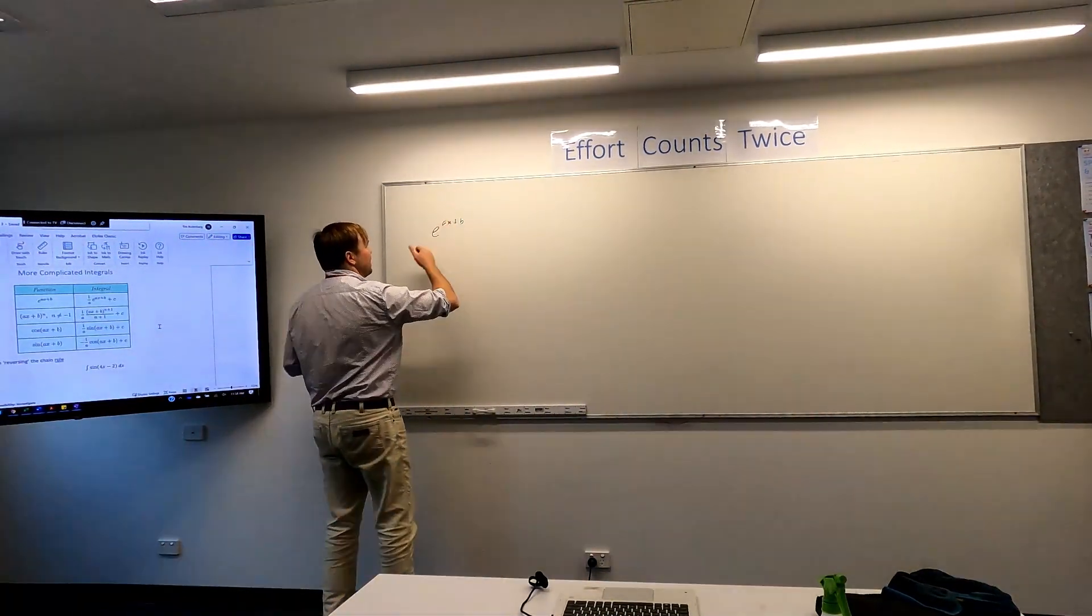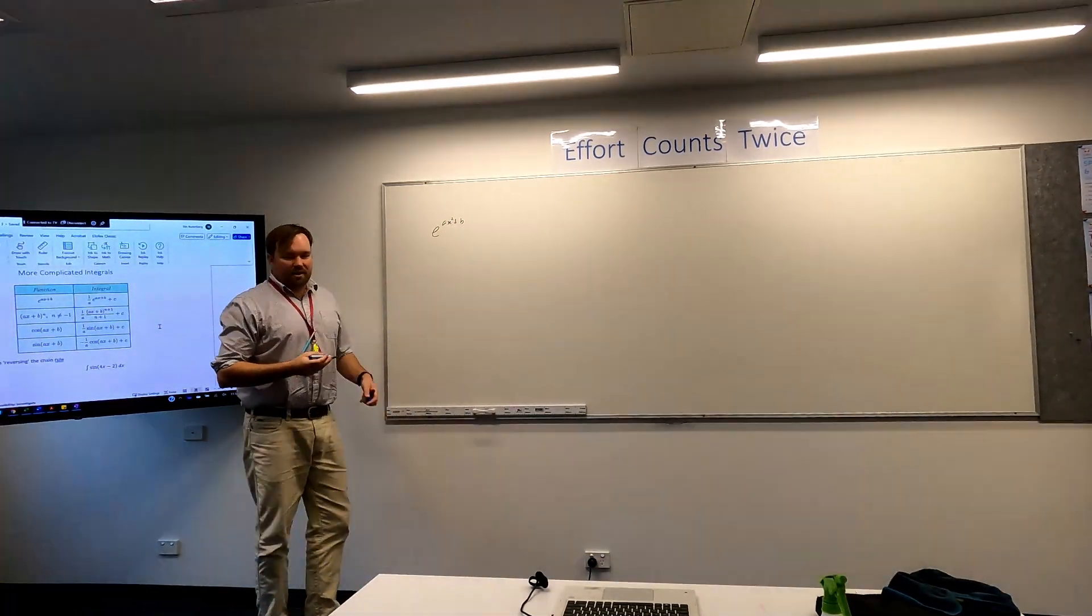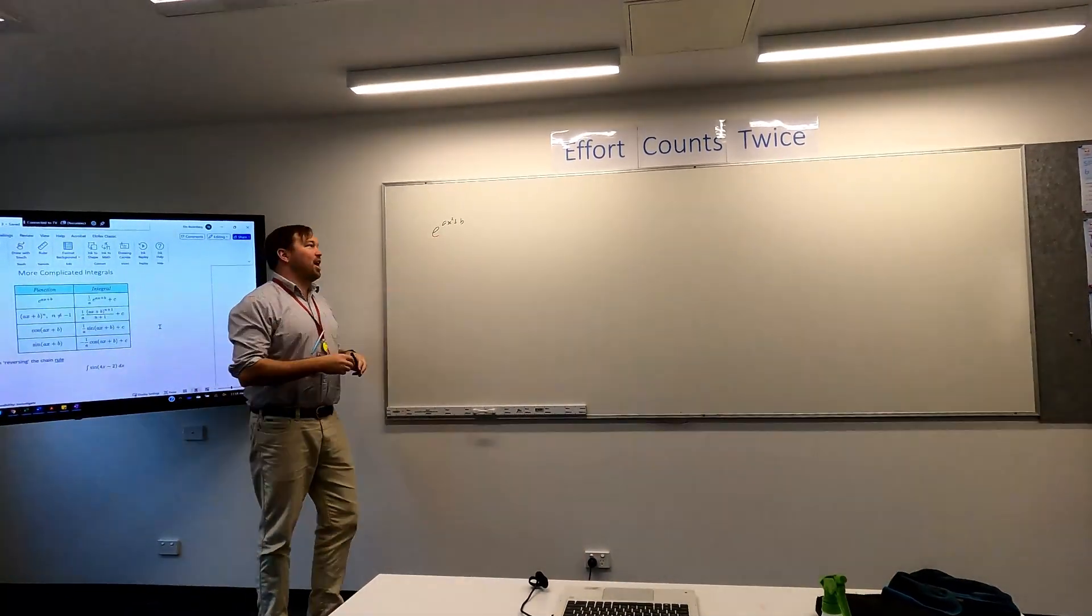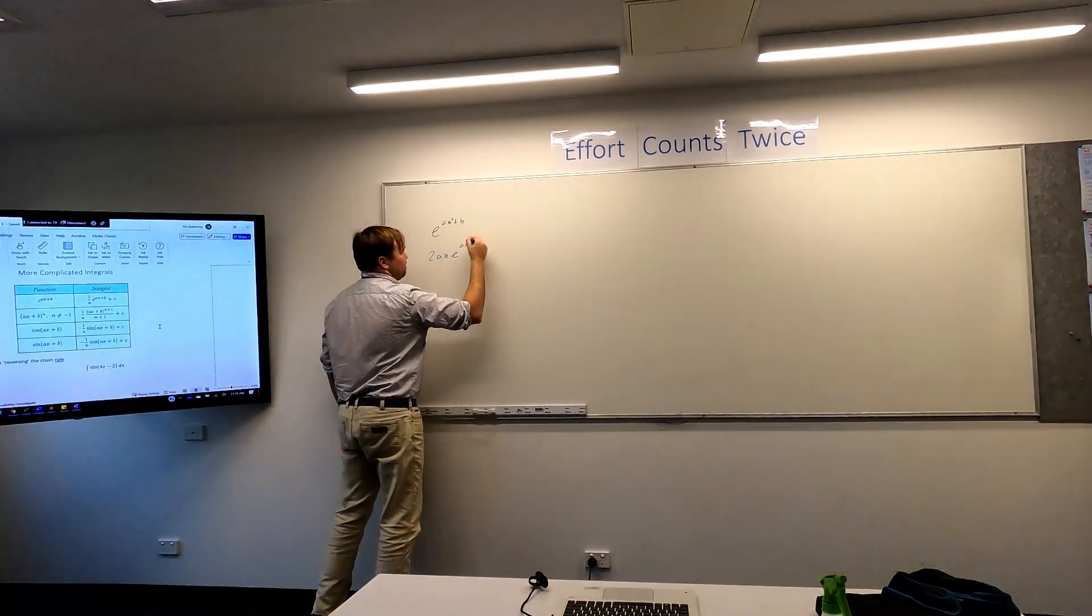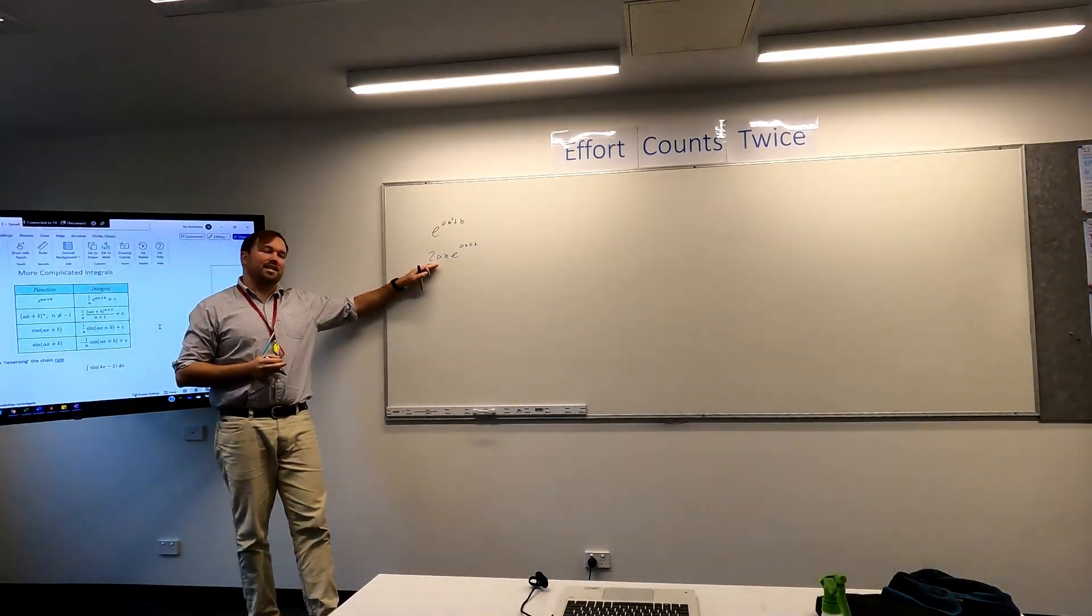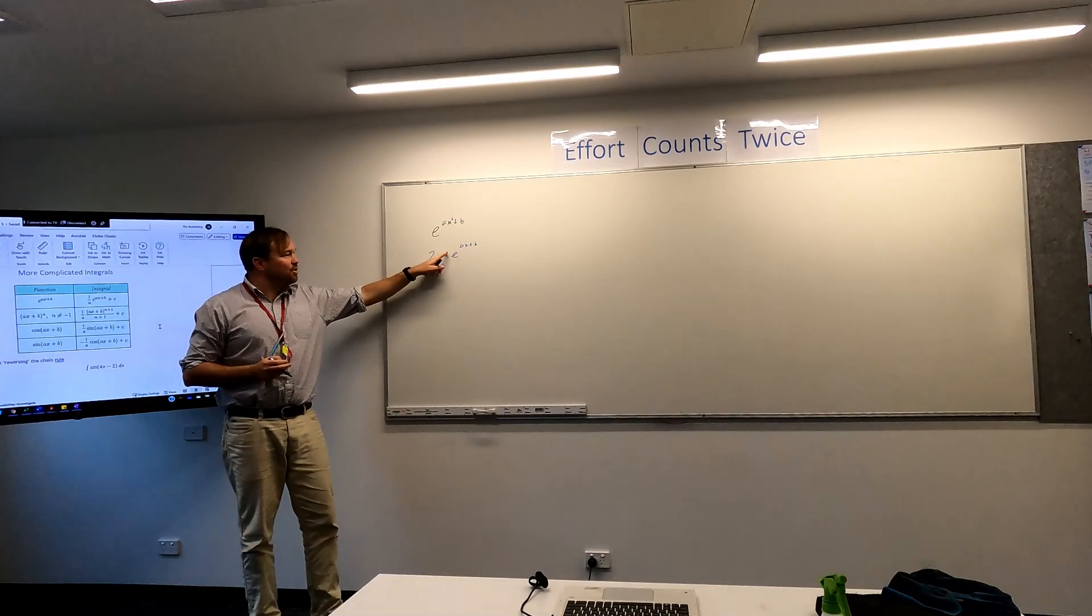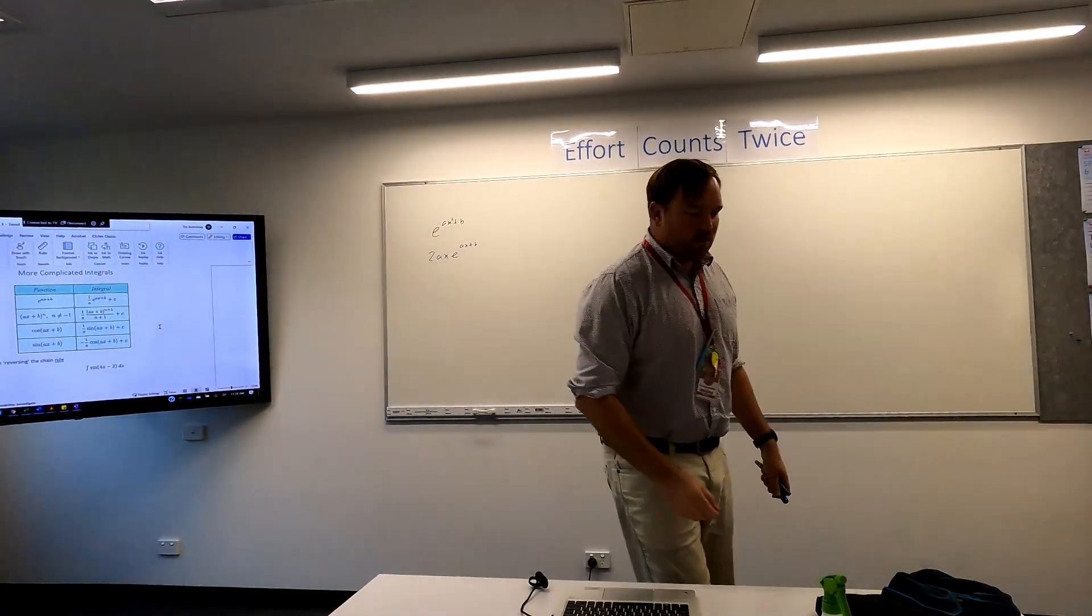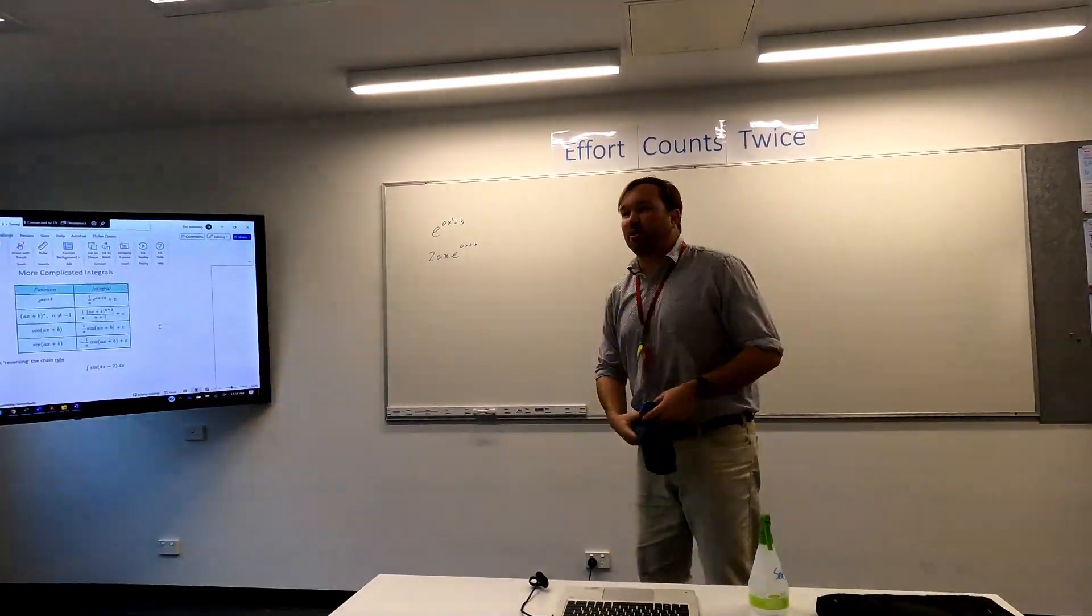Now, why would this be very different with a 2 there? Because you have like an x squared. Yeah, because if we were going to differentiate this, the chain rule would throw out 2ax e to the ax squared plus b. The thing is, if we were going to differentiate this, it would use product rule. So there's no way to counteract that smoothly, because the derivative of this gets much more complex. So these integrals, while the title is more complicated integrals, they're only a very little bit more complicated.